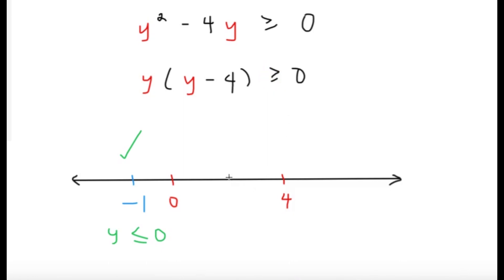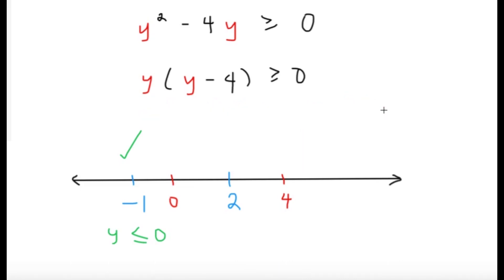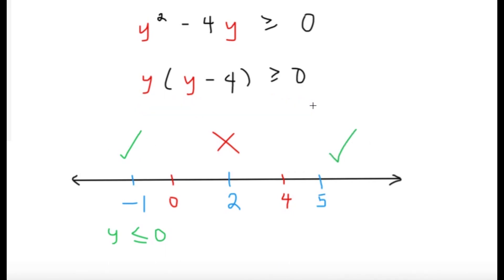Now let's test 2 as a value in the middle region. Substituting into y gives 2, y minus 4 becomes negative 2, so 2 times negative 2 equals negative 4, which is not greater than or equal to 0. So this doesn't work, and we would not consider any solution in the middle region. Then let's try 5 in the right region: 5 times 1 equals 5, which is greater than or equal to 0. Because we have an equality case in the inequality, all values of y greater than or equal to 4 are going to work.